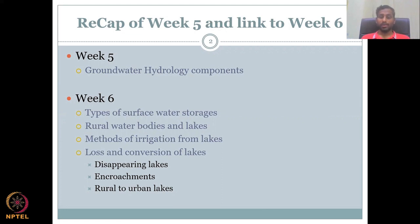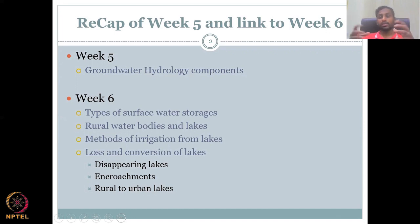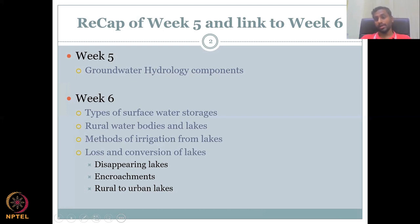There is a big concern about what is happening in the current scenario. Most villages are experiencing loss and conversion of lakes. We will look into why this phenomenon is happening — disappearing lakes, encroachments, and conversion from rural to urban. Disappearing often means the entire lake or water body is drained and construction is built on top, or in Kerala, vegetation or agricultural crops grow on it. Encroachments block the water so it is drained indirectly, while rural-to-urban conversion occurs as urban centers expand and boundary villages lose their water bodies.